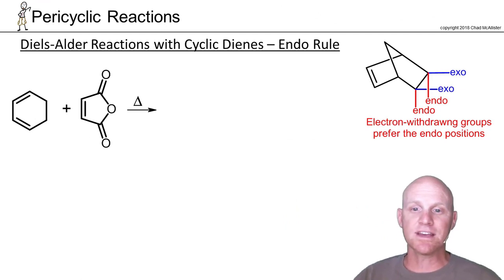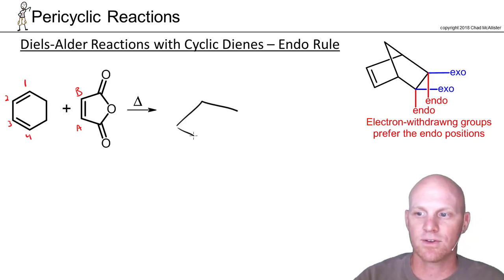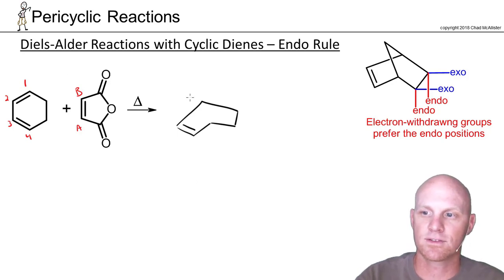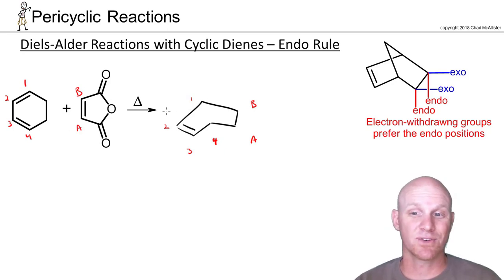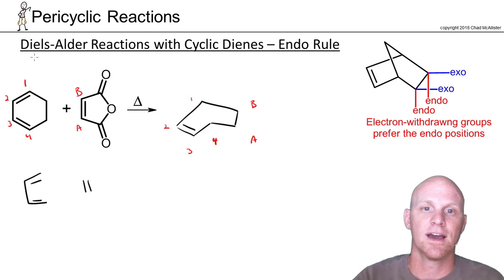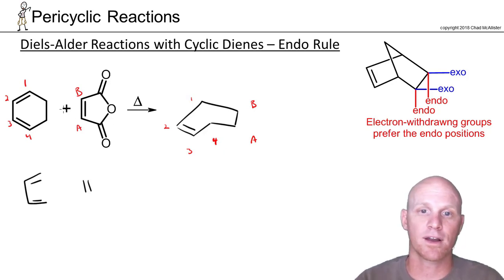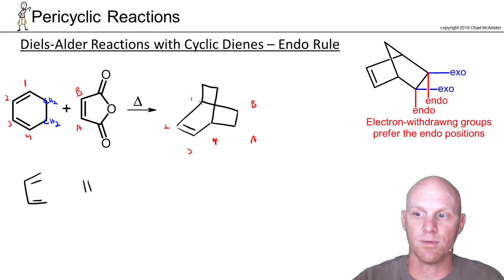For the next example, I look at my diene — positions 1, 2, 3, 4 — and positions A and B. Drawing my most basic Diels-Alder product, I ask: what's different about my reactants compared to my most basic Diels-Alder reactants? One difference is that connecting carbons 1 and 4 are two CH2s — a two-carbon bridge instead of a one-carbon bridge. So the first thing I'll do is draw a two-carbon bridge with those CH2s.